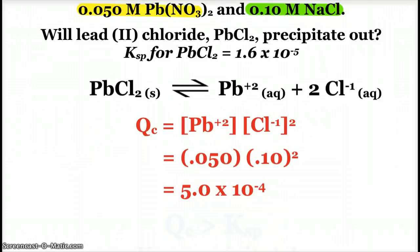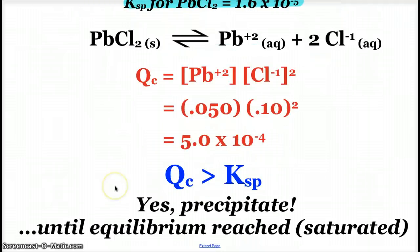Then I can compare that to my Ksp value, which is 1.6 times 10 to the negative 5th. So since it is greater, yes, we will see precipitate. And it would only precipitate until equilibrium is reached, and we would have our saturated solution at that point.